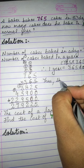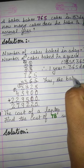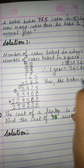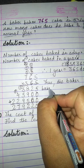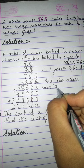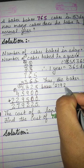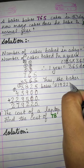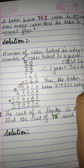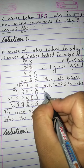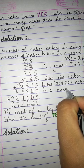So in 365 days, when the baker bakes 765 cakes per day, the last statement is: the baker bakes 2,79,225 cakes in a normal year.